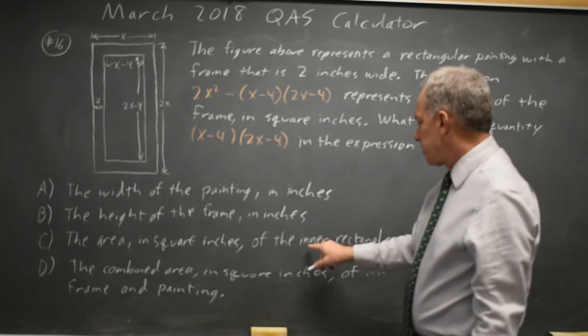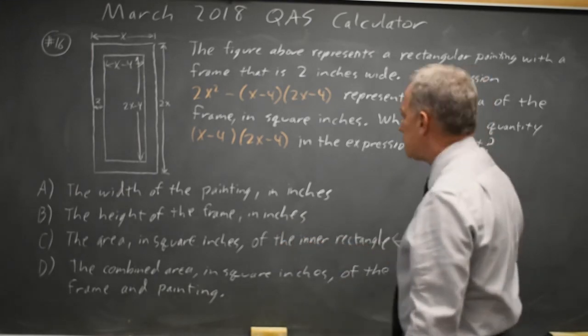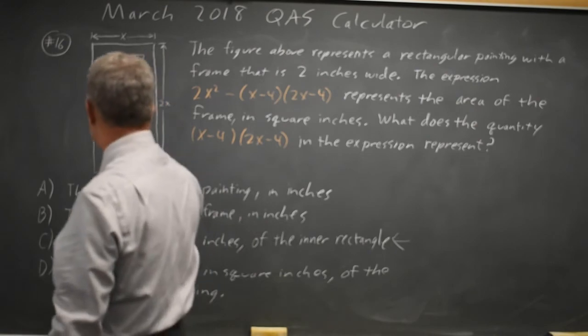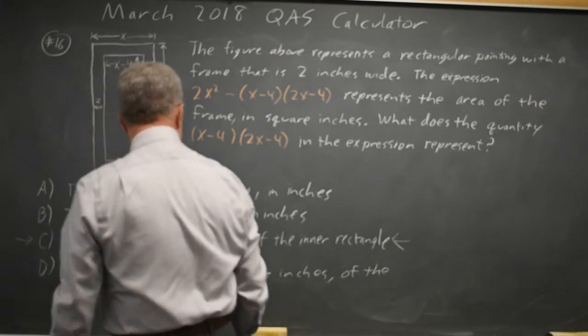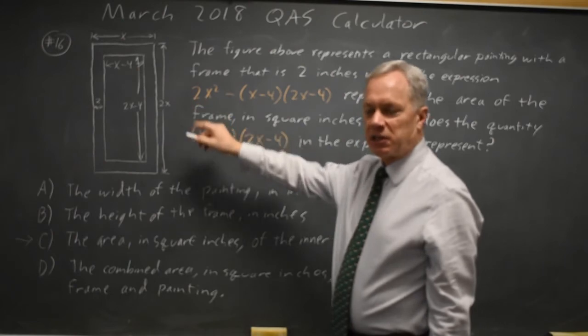The area in square inches of the inner rectangle is the product (x-4)(2x-4), so that would be choice C. And the combined area would be the 2x² here.